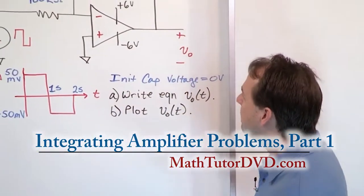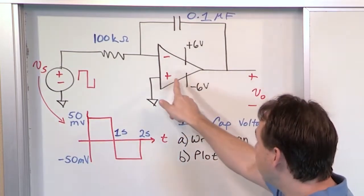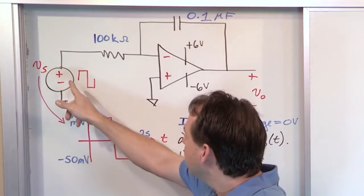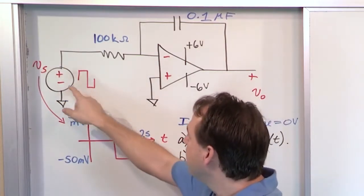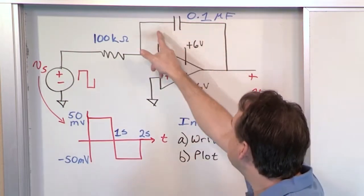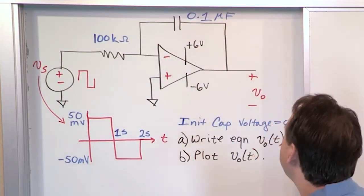Our first problem looks like this. We have a typical integrating amplifier configuration with the non-inverting terminal grounded. We have some input signal, which you'll see in a second is a square pulse, that's driven through a 100 kiloohm resistor.